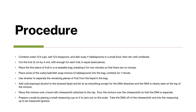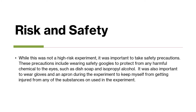Place this mixture over a bowl with cheesecloth attached to the top. Pour the mixture over the cheesecloth so that the DNA is separated. Prepare a scale by placing a small measuring cup on it to zero out the scale. Take the DNA off of the cheesecloth and into the measuring cup to be measured. While this was not a high-risk experiment, it was important to take safety precautions. These precautions include wearing safety goggles to protect from any harmful chemicals to the eyes, such as dish soap or cold isopropyl alcohol. It was also important to wear gloves and an apron during the experiment to keep from getting injured from any of these substances.